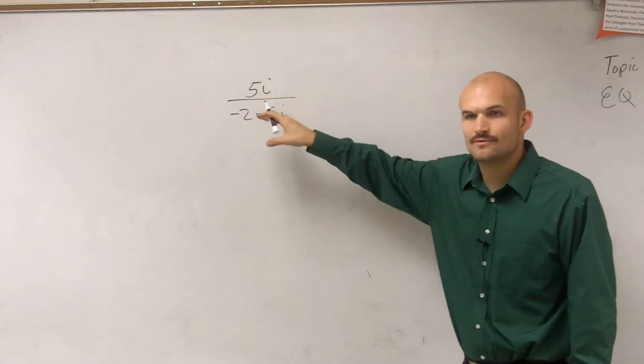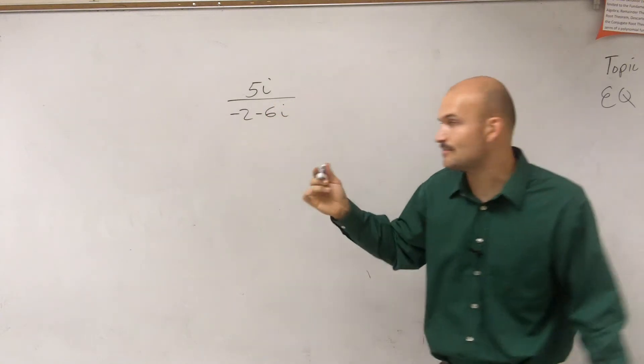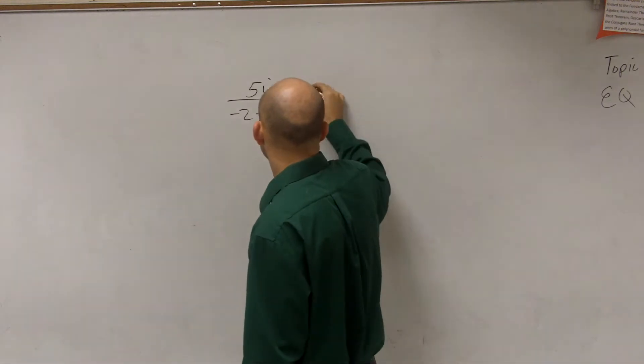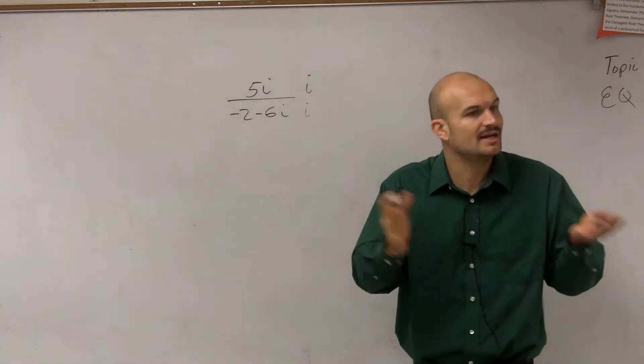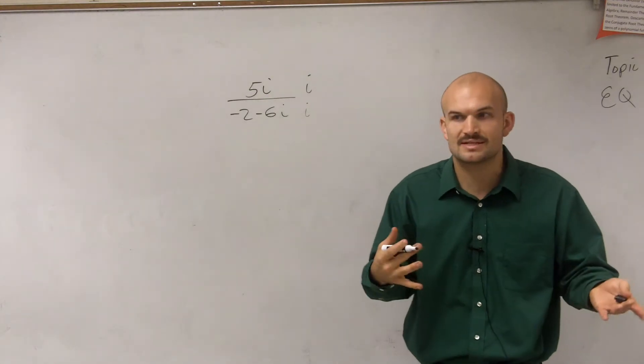So when we want to get rid of i off the bottom, what we did last problem was we multiplied by i. Right? And that was pretty simple because if you multiply by i, you're going to get i squared, which we know represents negative 1.